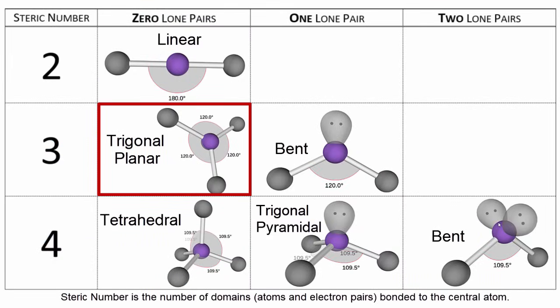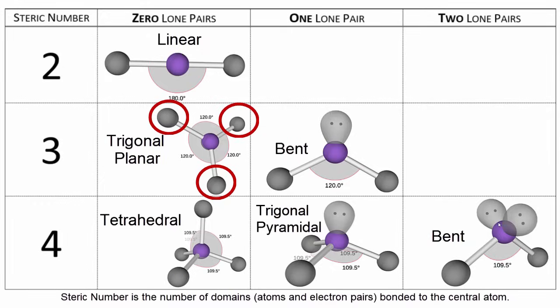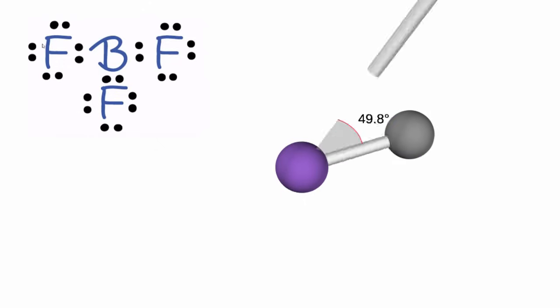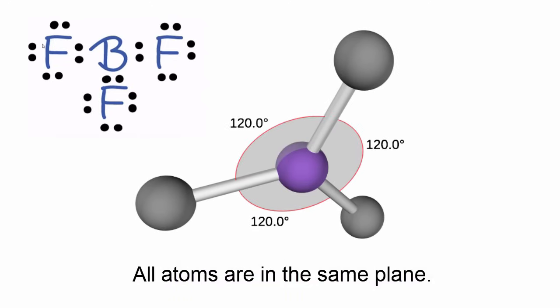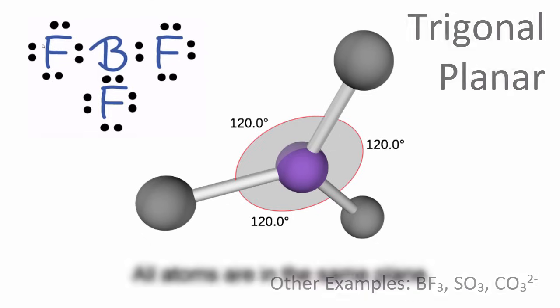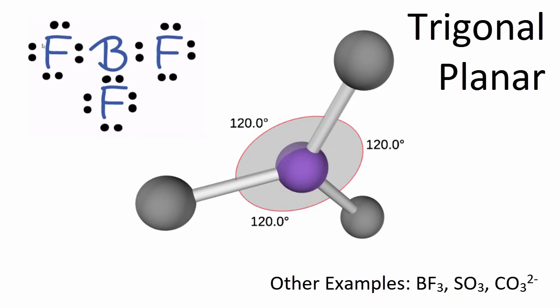Next, we move to trigonal planar, where we have three atoms and no lone pairs bonded to a central atom. BF3 has a trigonal planar molecular shape. In the Lewis structure, you can see three atoms and no lone pairs bonded to that central boron atom. We have the central boron, and then we add fluorine atoms — one, two, they spread out, three — to form the trigonal planar molecular geometry. We have bond angles of 120 degrees and there are no lone pairs.